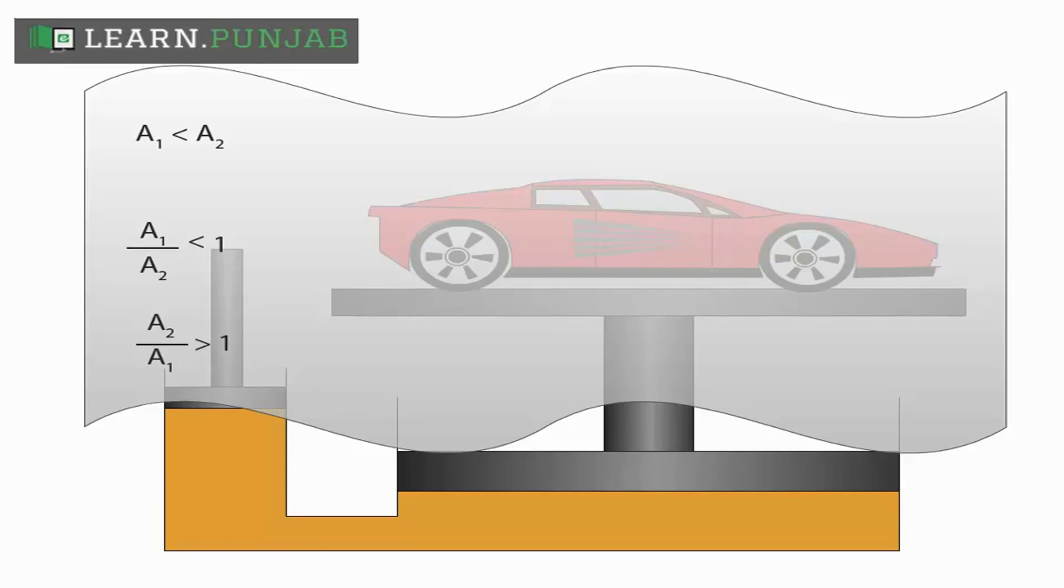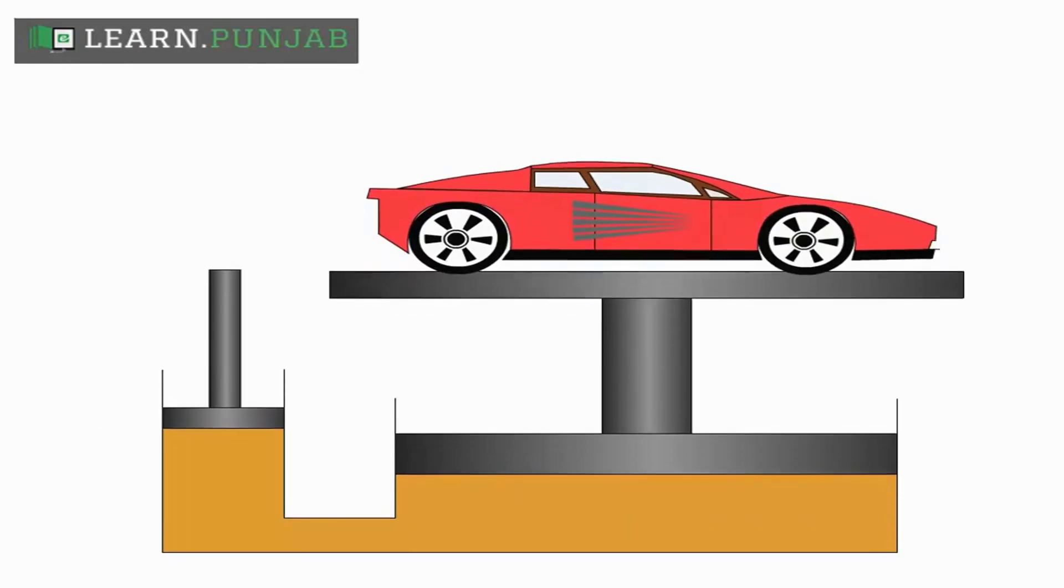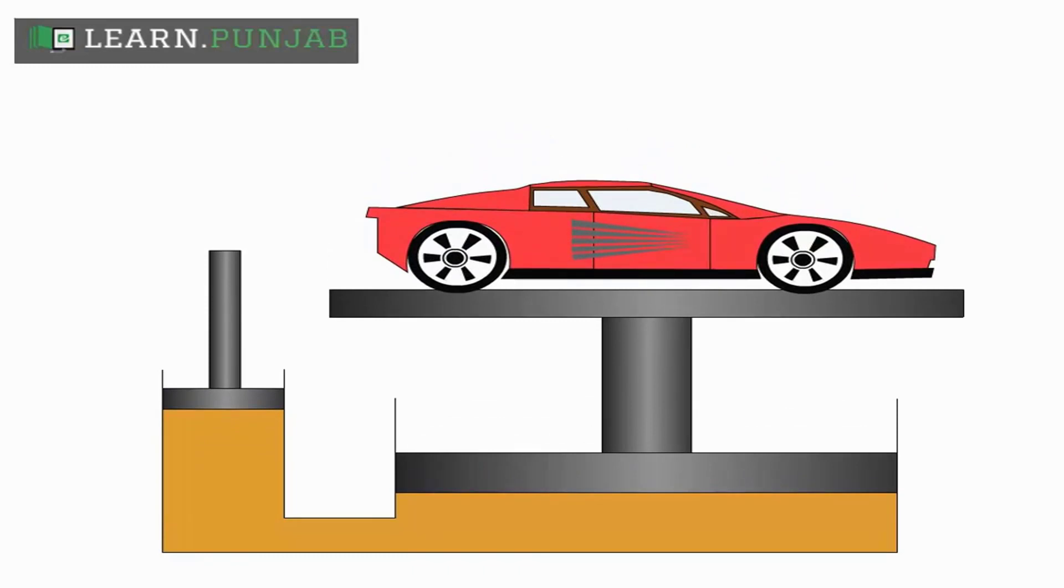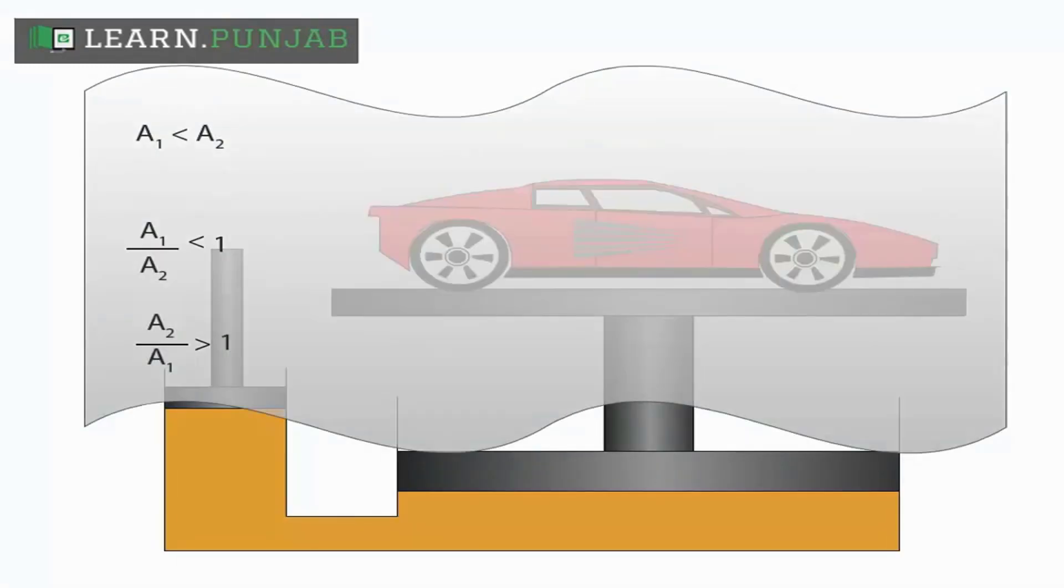When force is applied on one piston, it is shifted to the other piston. To increase the force, the area of cross section of the other cylinder is kept greater. Now if F1 force is applied to one piston, it will be shifted to the other piston and this will be represented as F2.